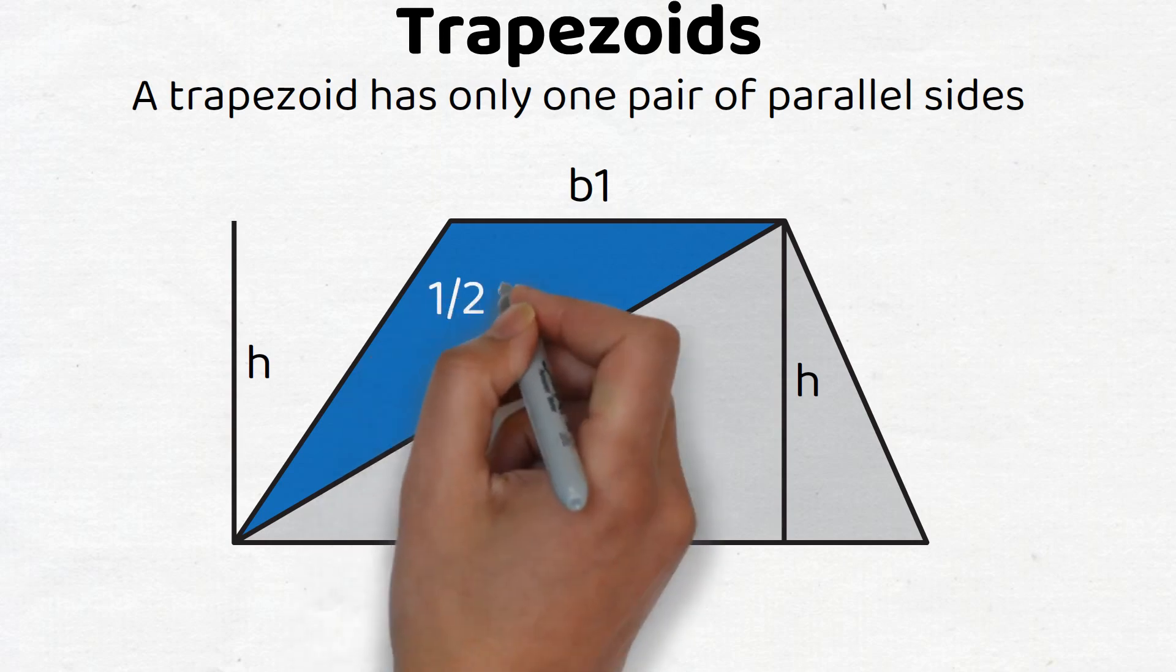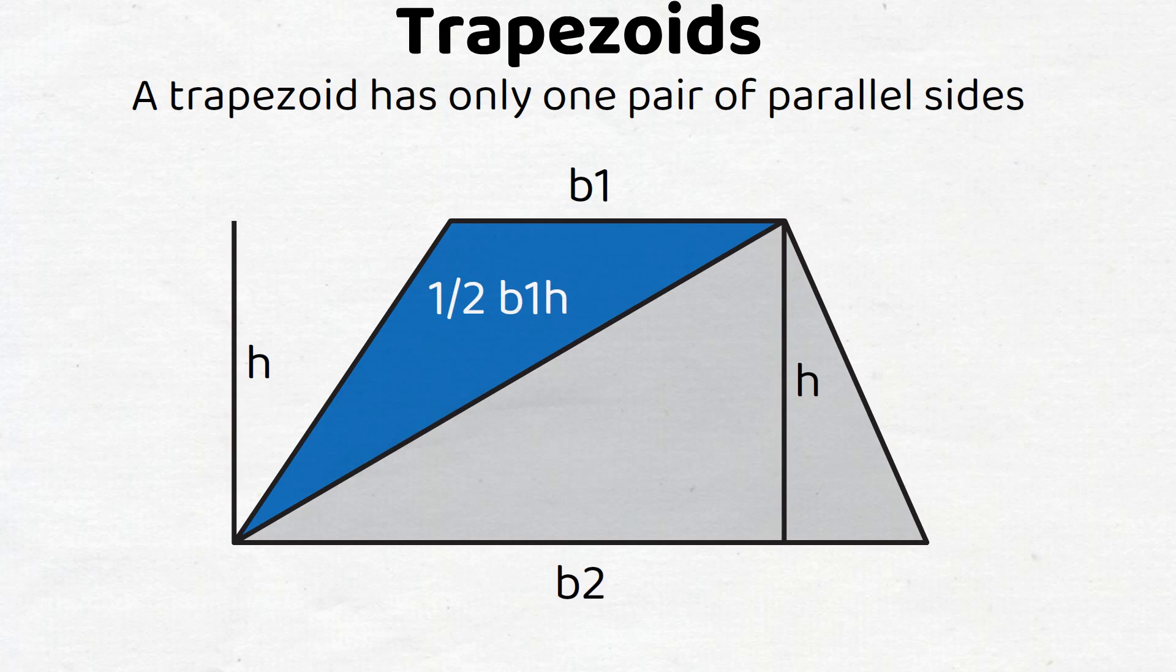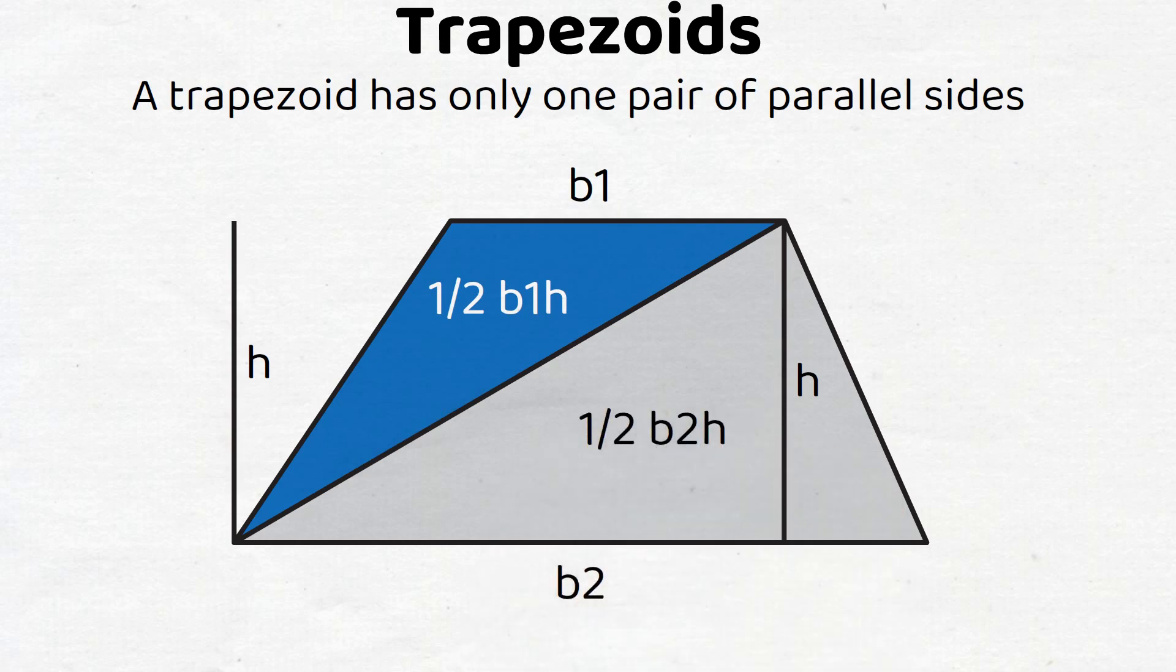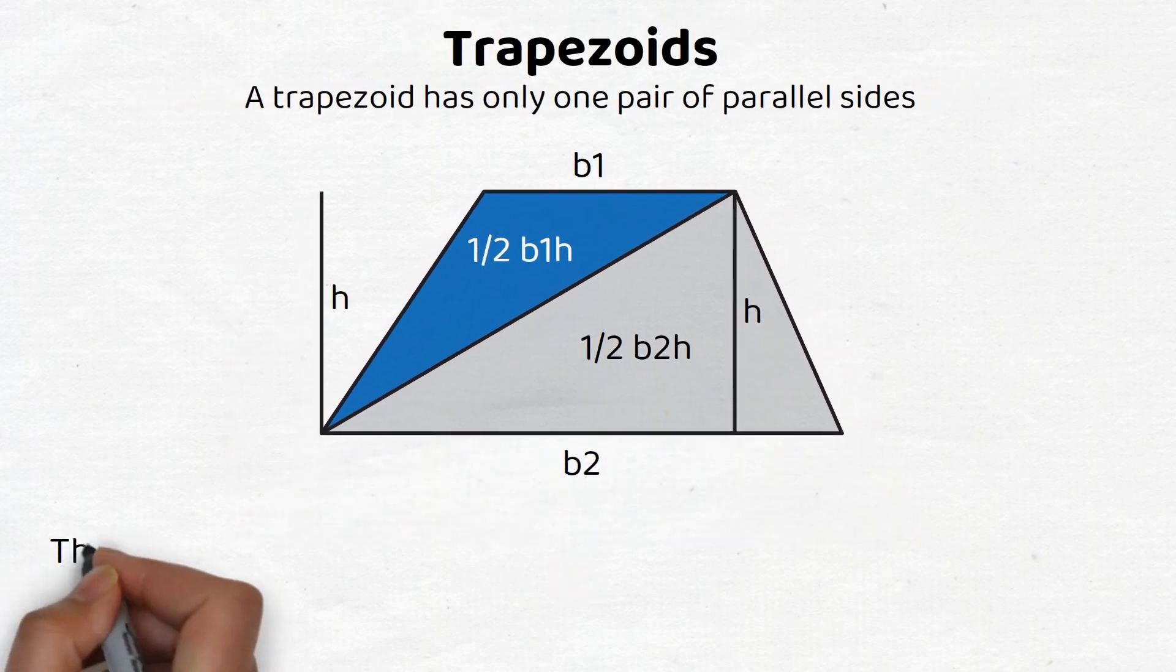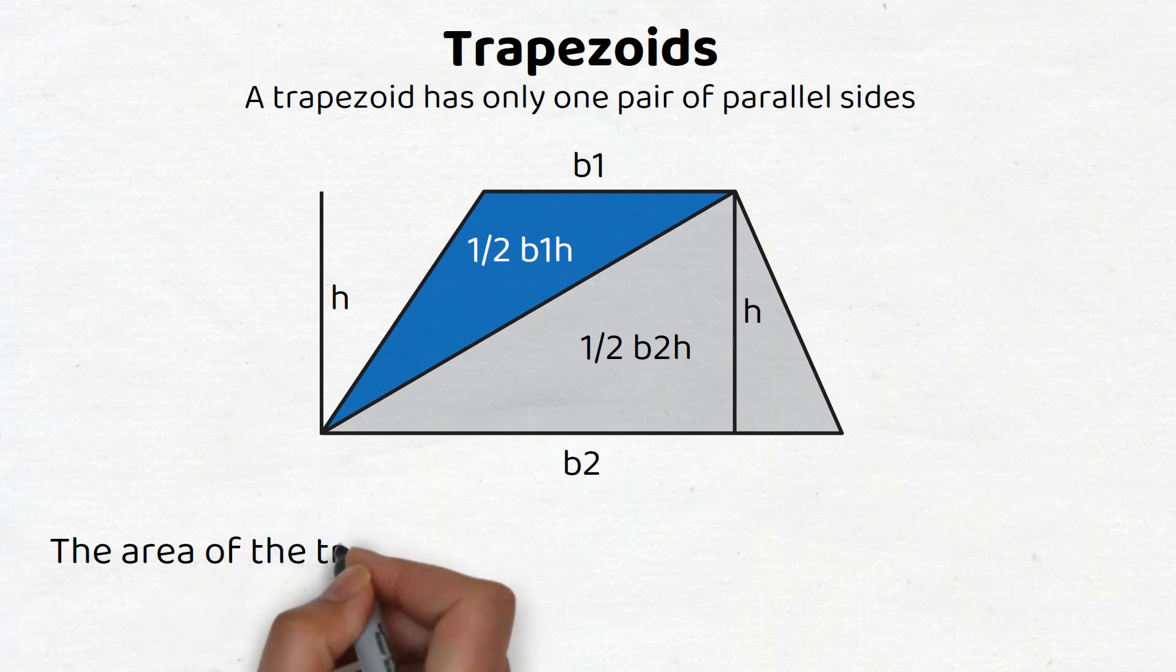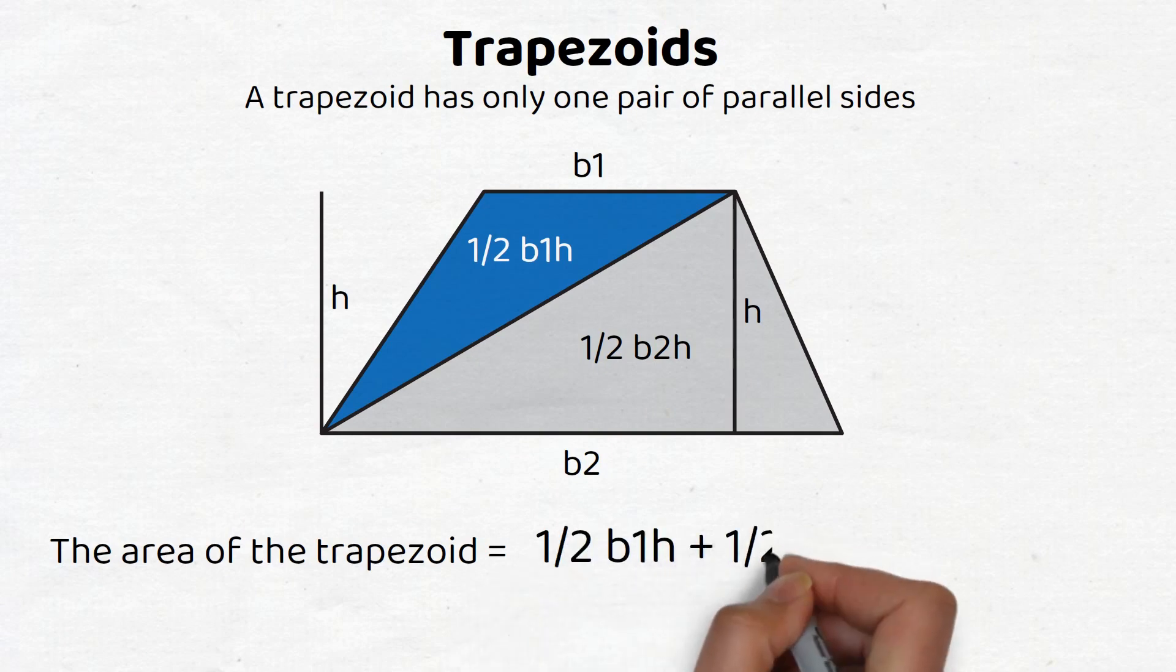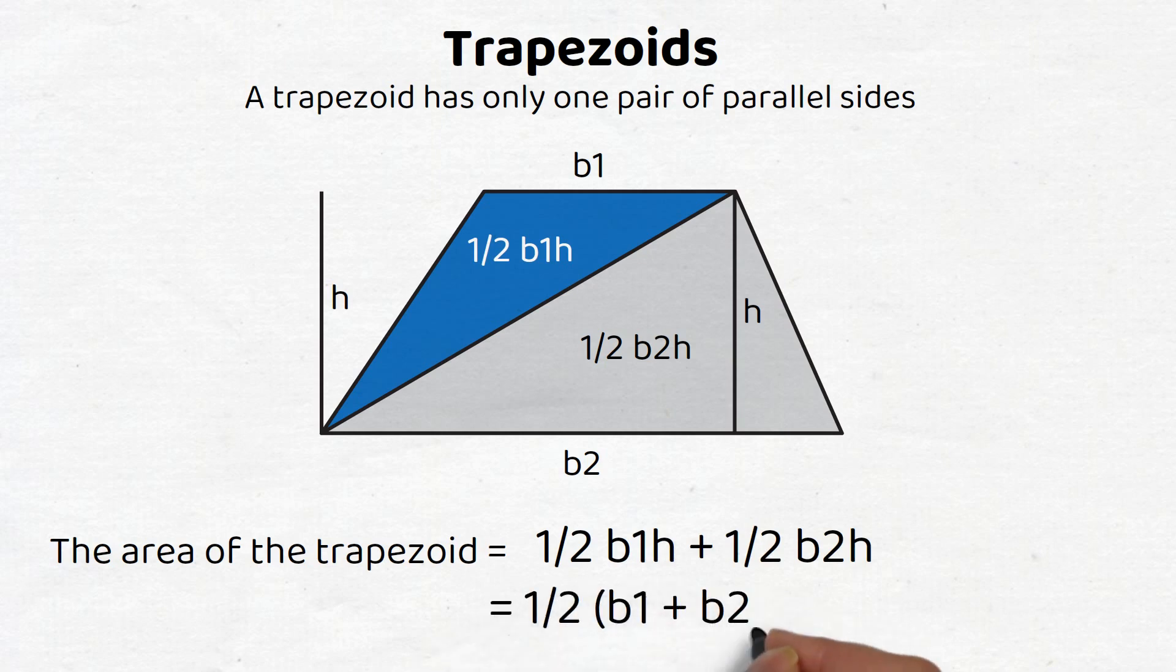The area of the top triangle is one half of the first base times the height, and the area of the bottom triangle is one half of the second base times the height. Thus the area of the entire trapezoid would be one half of the first base times the height, plus one half of the second base times the height. Put into a more succinct formula, it would be one half of the first base plus the second base times the height.